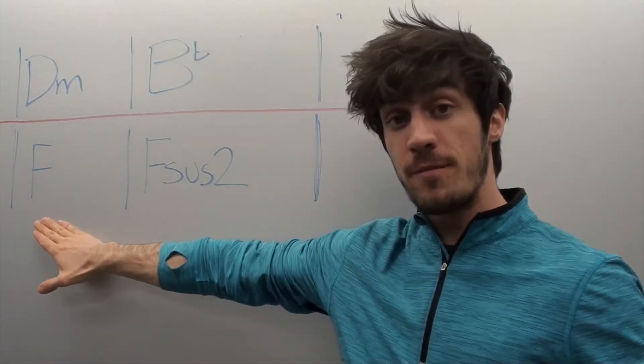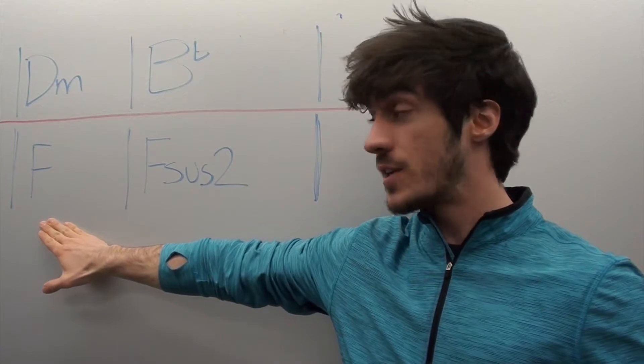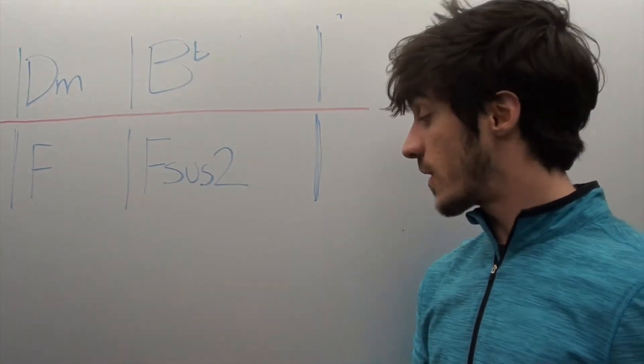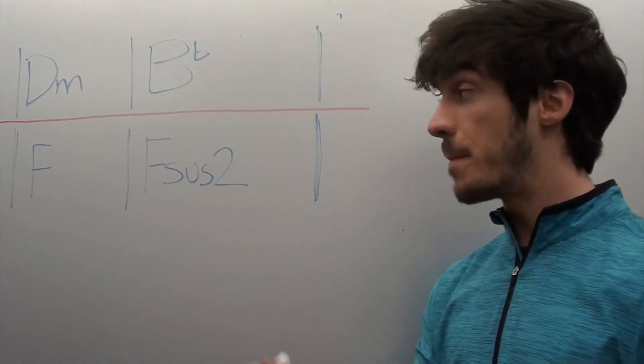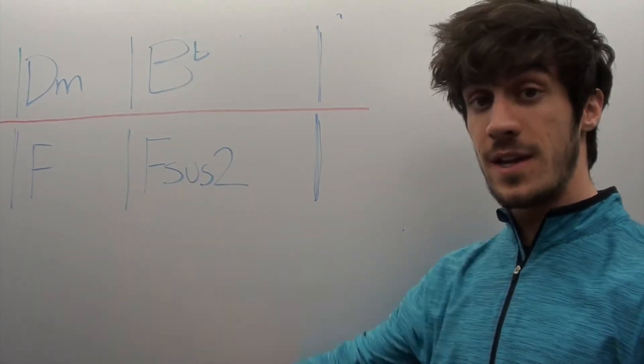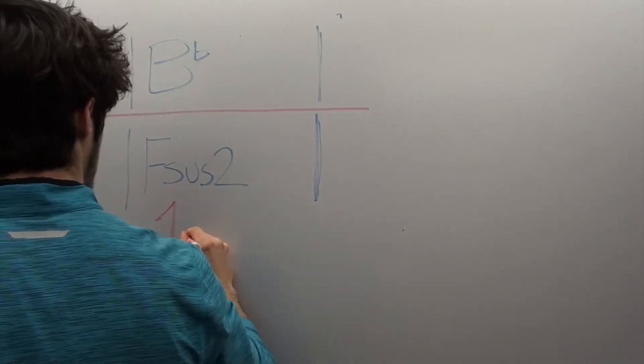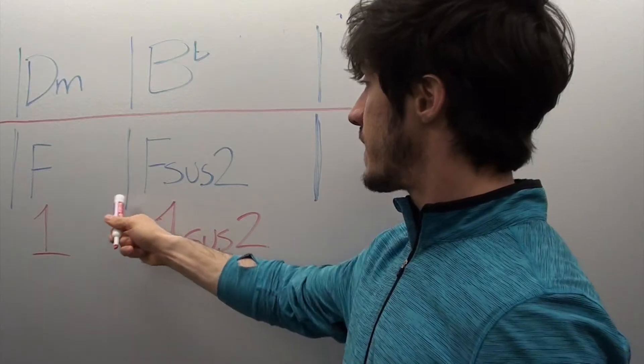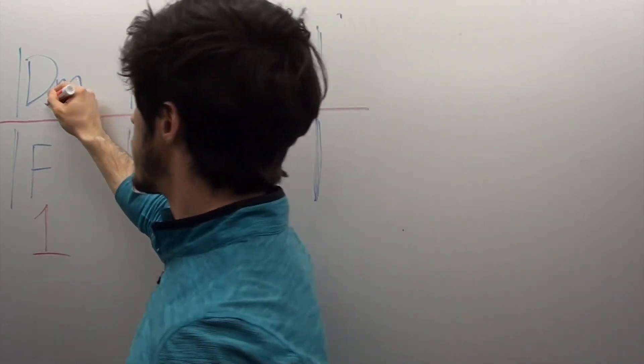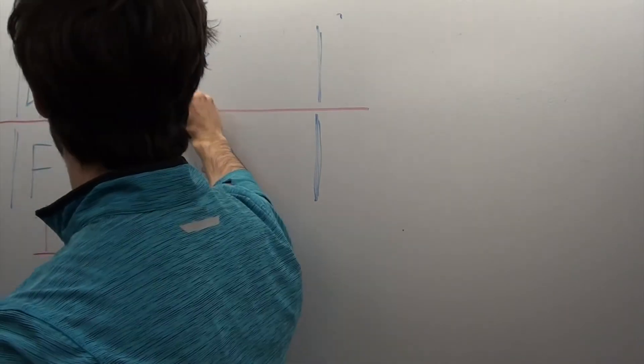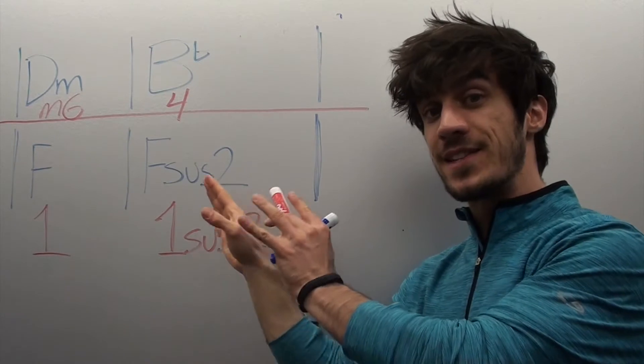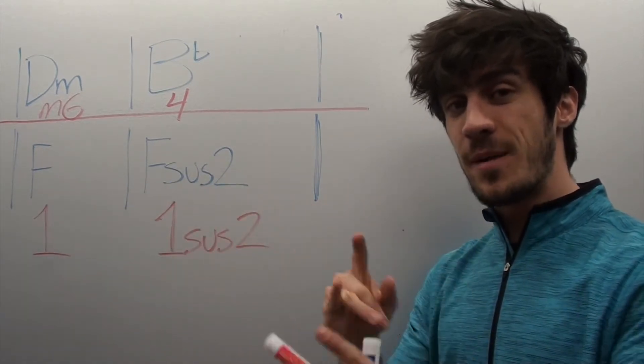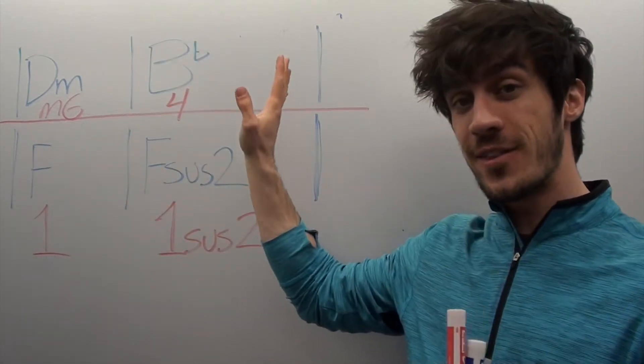So let's say we're in the key of F major. That's the first thing that we've got to understand. Once we know that F is our key, we have to assign a number to each one of these chords based on that. Since F is our key, F is 1. This is a 1sus2. Based on it being an F, we can figure out that D minor is a minor 6 and B flat is a 4. Now that we have numbers instead of these chords, we can take these numbers and use them to put this progression in another key.